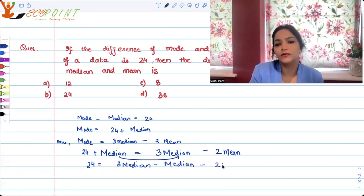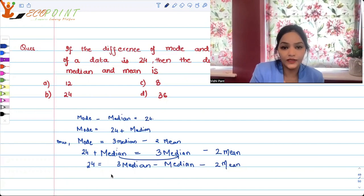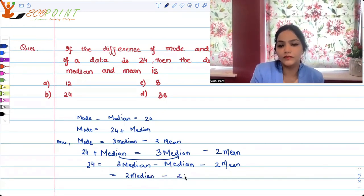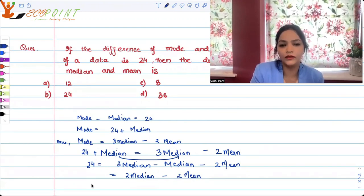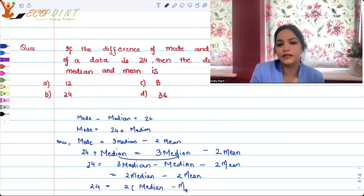Minus 2 times mean. So that means I can say 24 is equal to 2 times median minus 2 times mean. And that means I can take 2 common — 24 is equal to twice of median minus mean. That is the difference between median and mean.